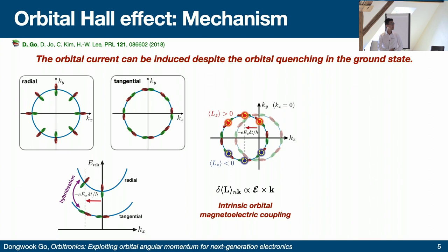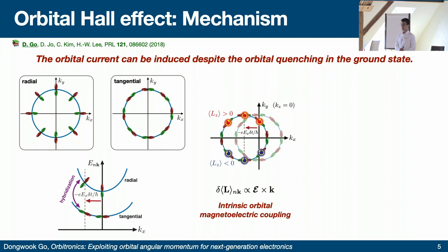Question from audience: What does dissipationless mean here — if you have dissipation you'll have the inverse and it could cause problems? Answer: That depends on the lifetime. If the hybridization can occur within the timescale before any scattering, it can occur. This results from an intrinsic response. That is why it is dissipationless in the sense that it also occurs in insulators.